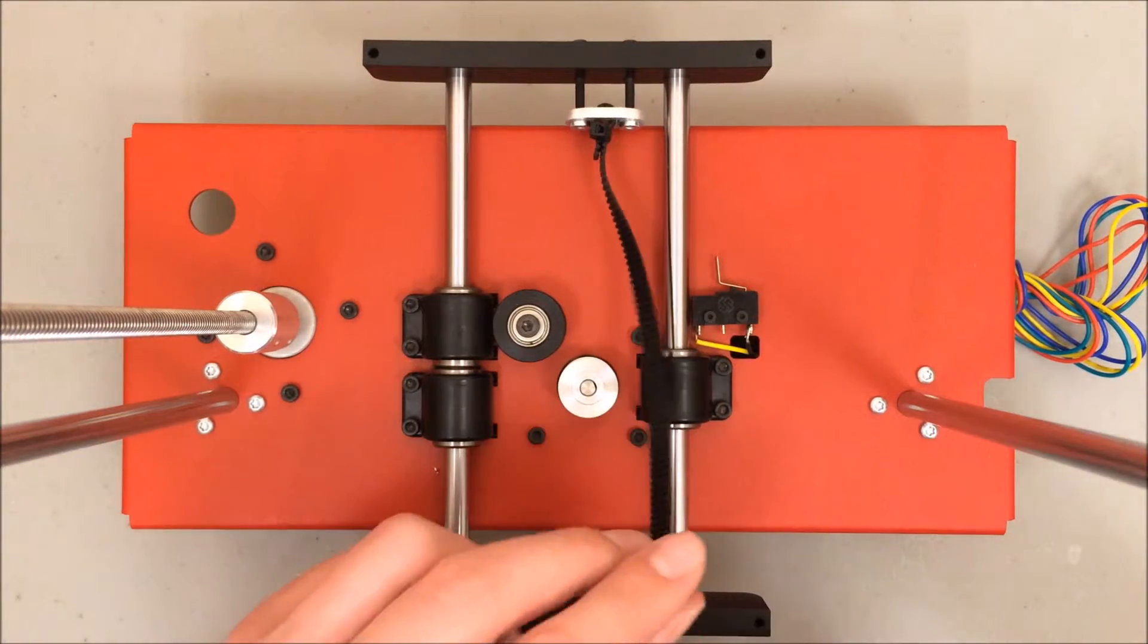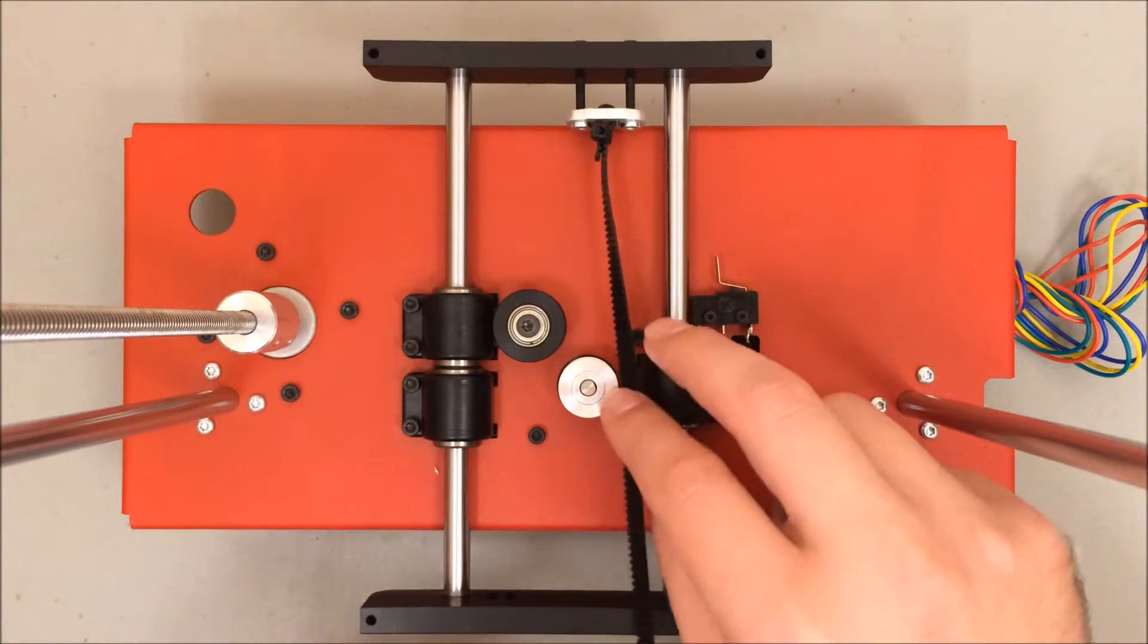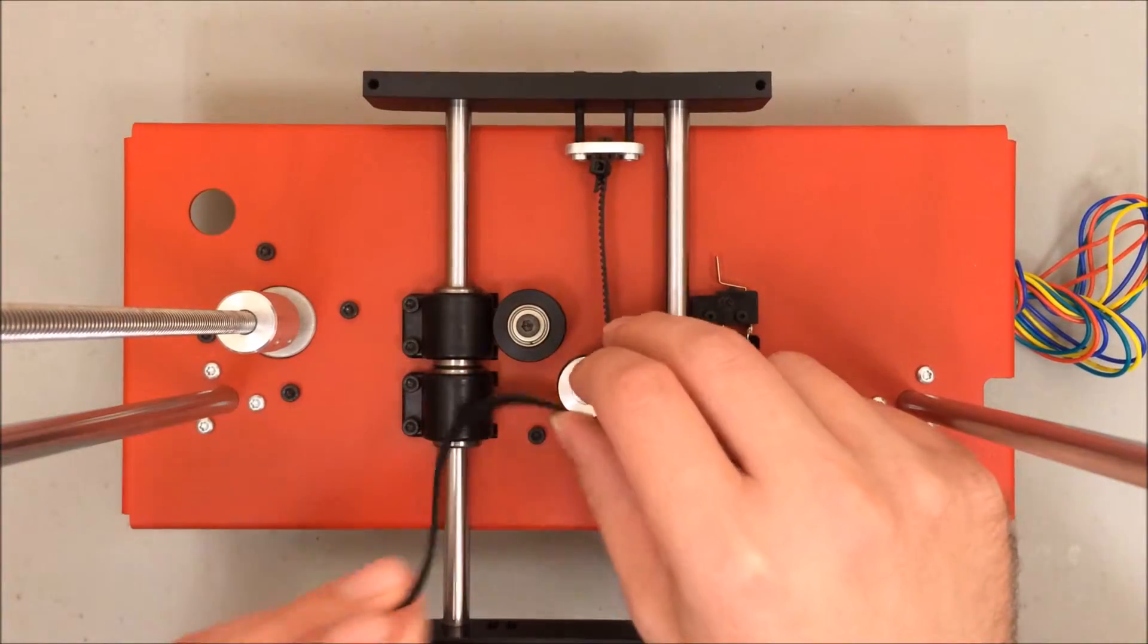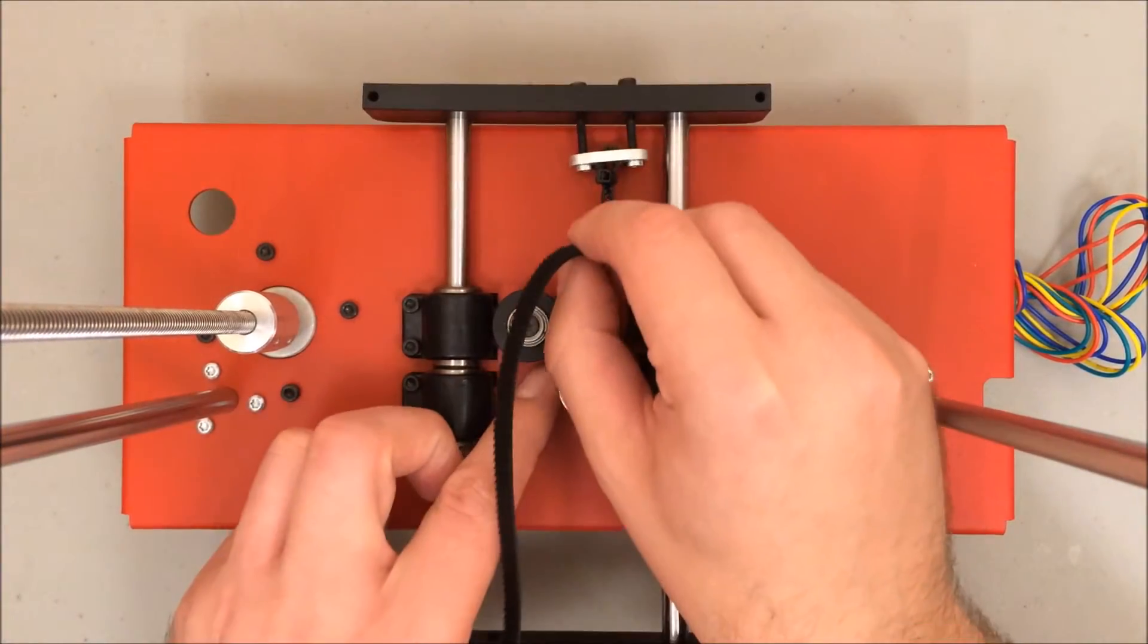So now it's time to feed the belt through the pulleys. First, I'm going to go around the toothed pulley. So the teeth of the belt wrap right into that toothed pulley.